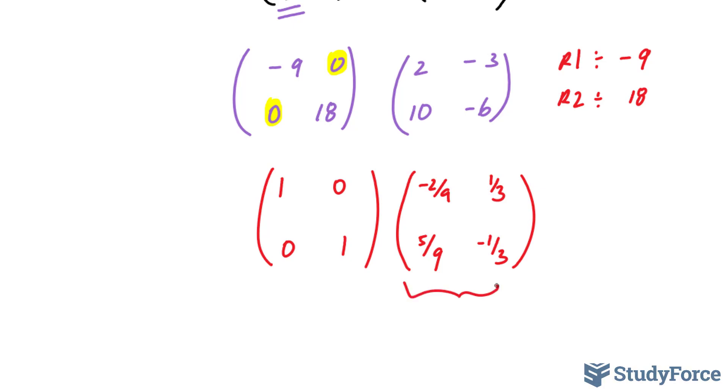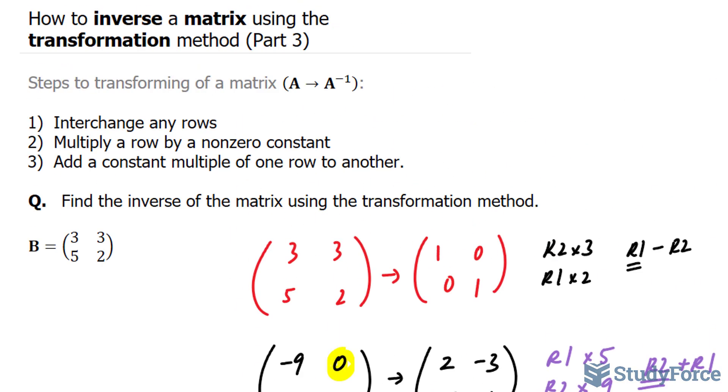This matrix right here represents the inverse matrix for B. And there you have it, another example on how to inverse a matrix using the transformation method.